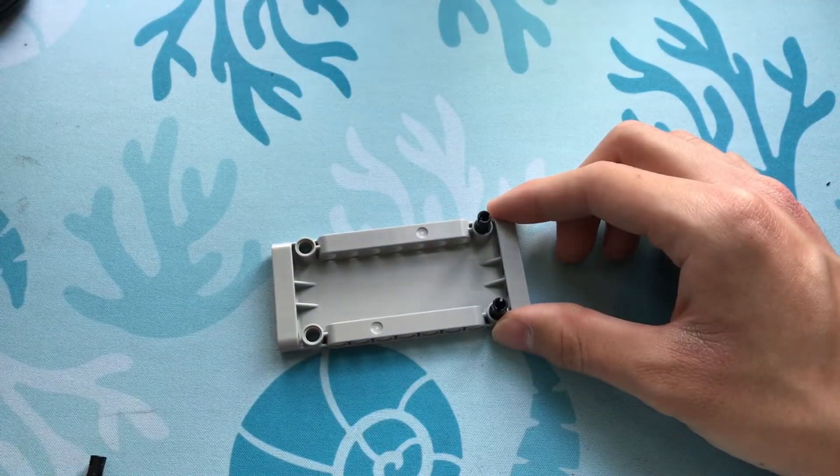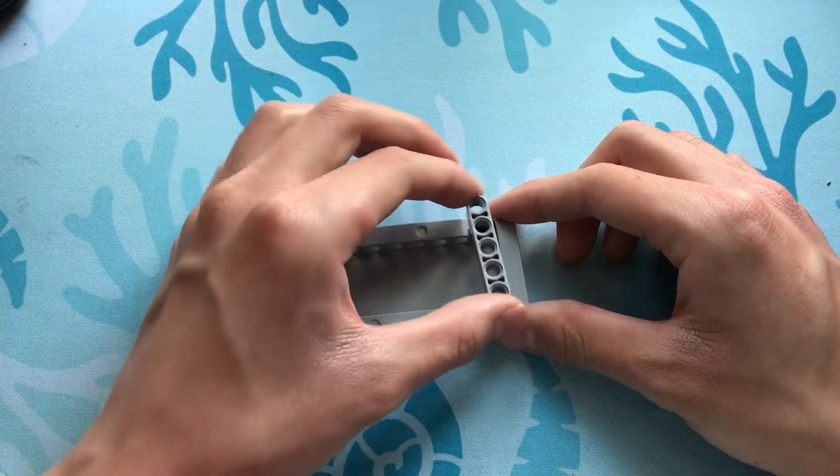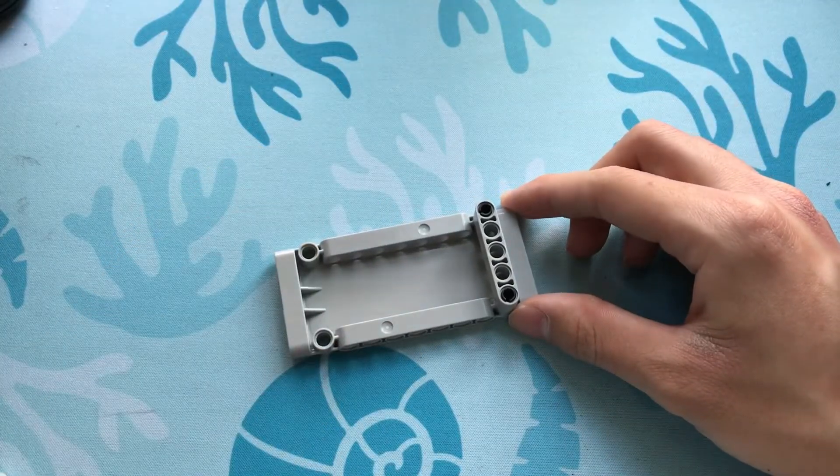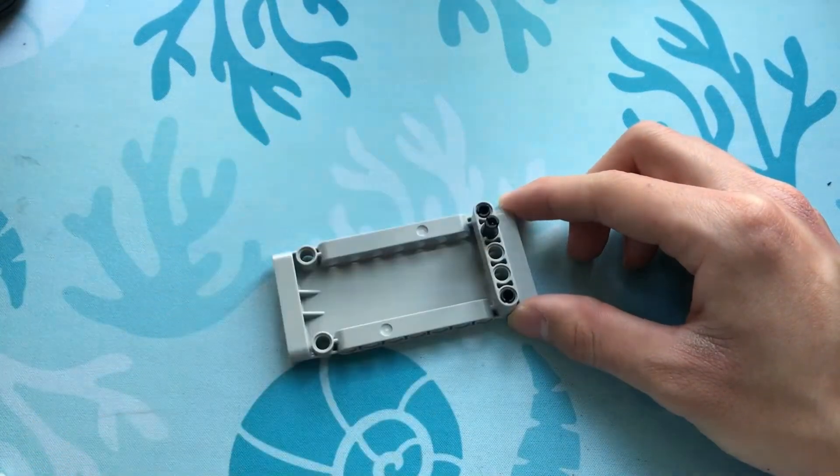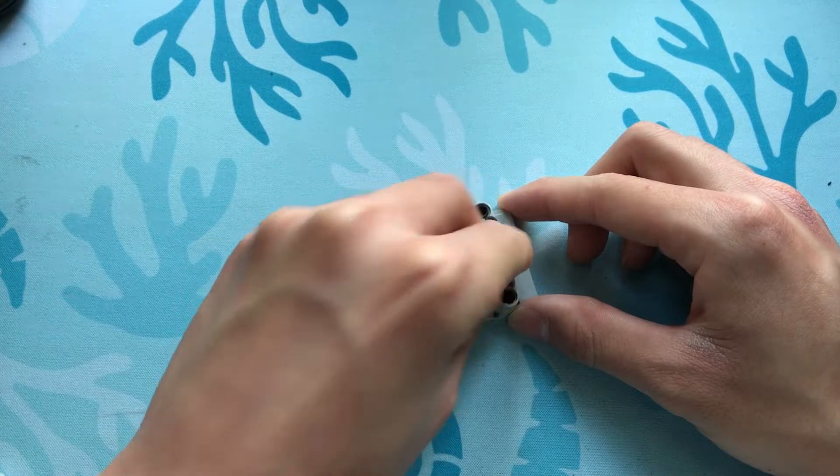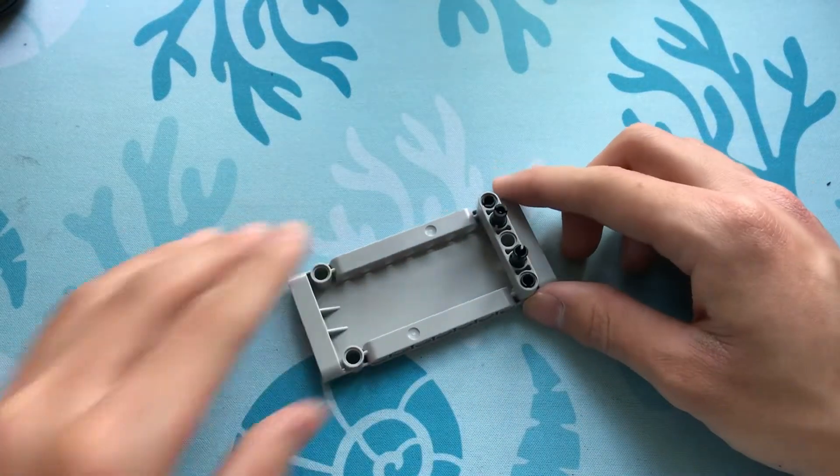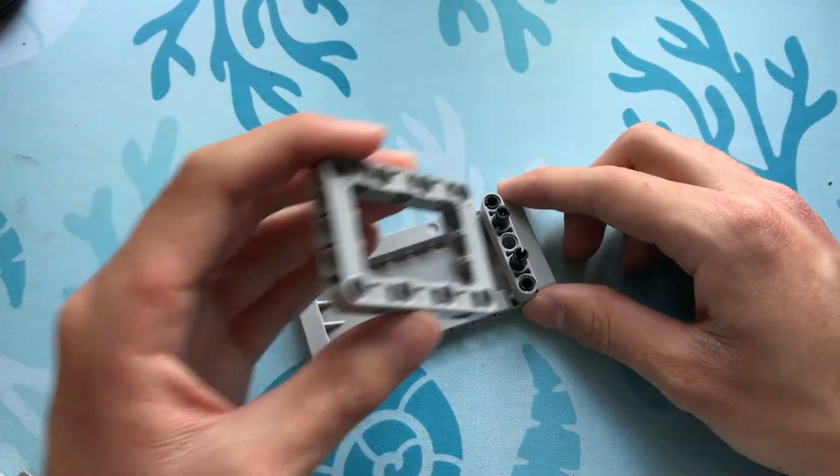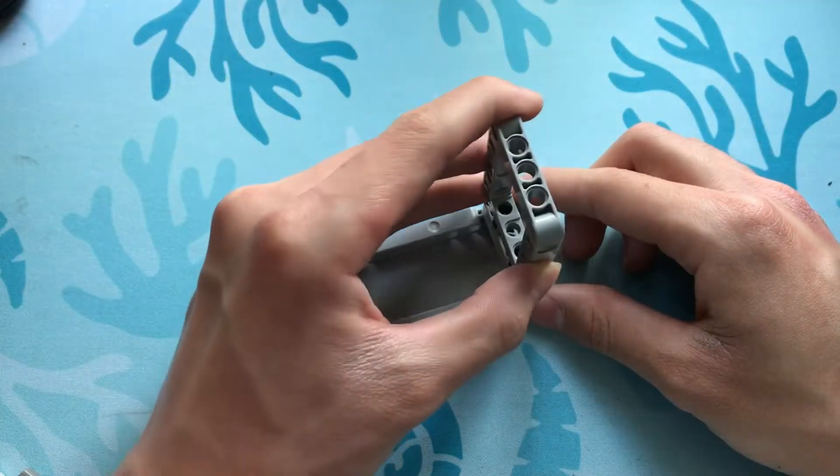Next, let's take a 5-beam and slide it onto the pins. After that, let's take two more of these black pins and insert them there and there. Let's take this frame and connect it like that.